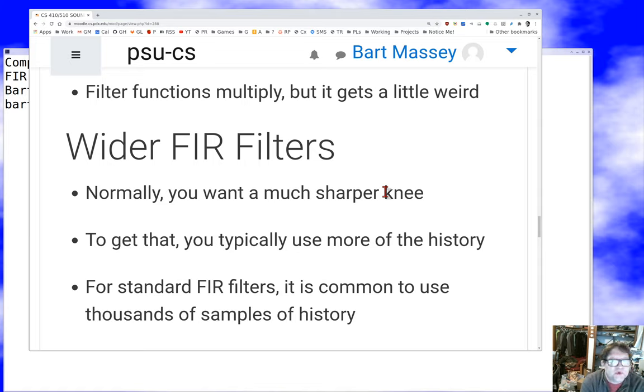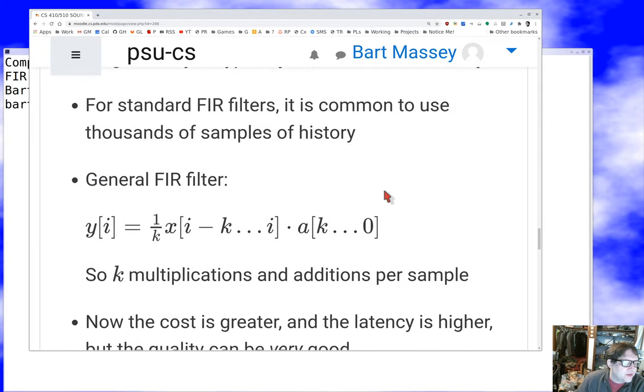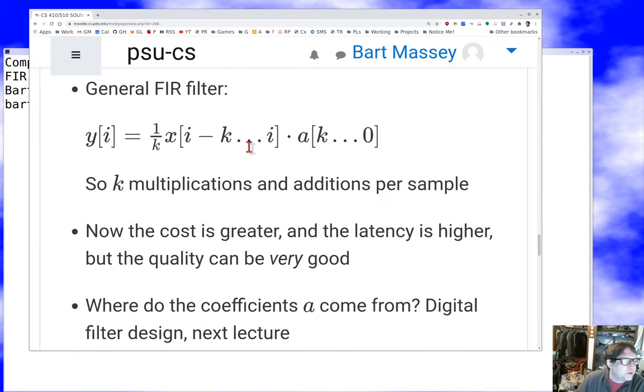What you normally do if you want a better filter, a filter with a sharper knee that is closer to the brick wall of frequency response we talked about last time, is you use a lot more of the history. You do a big convolution instead of a little convolution. It's really common to do thousands of samples of history in your convolutions.